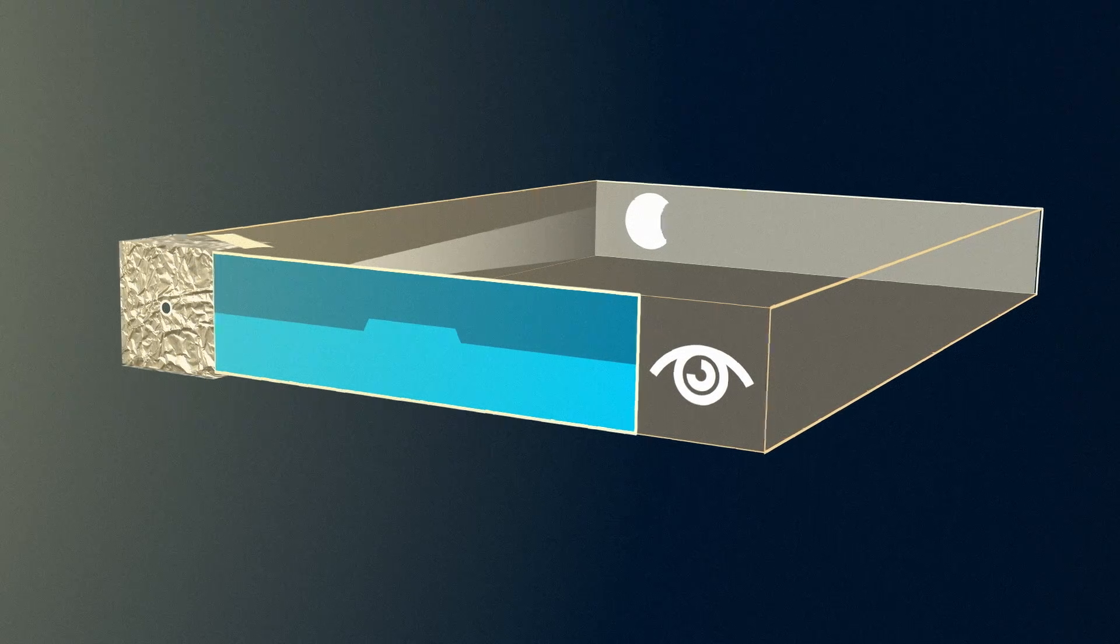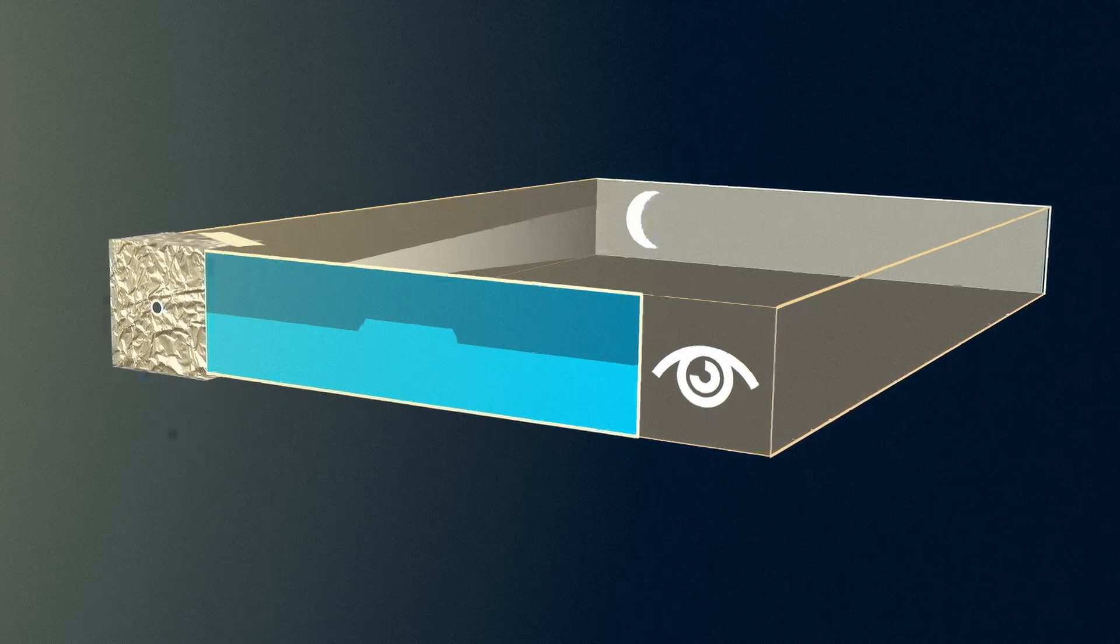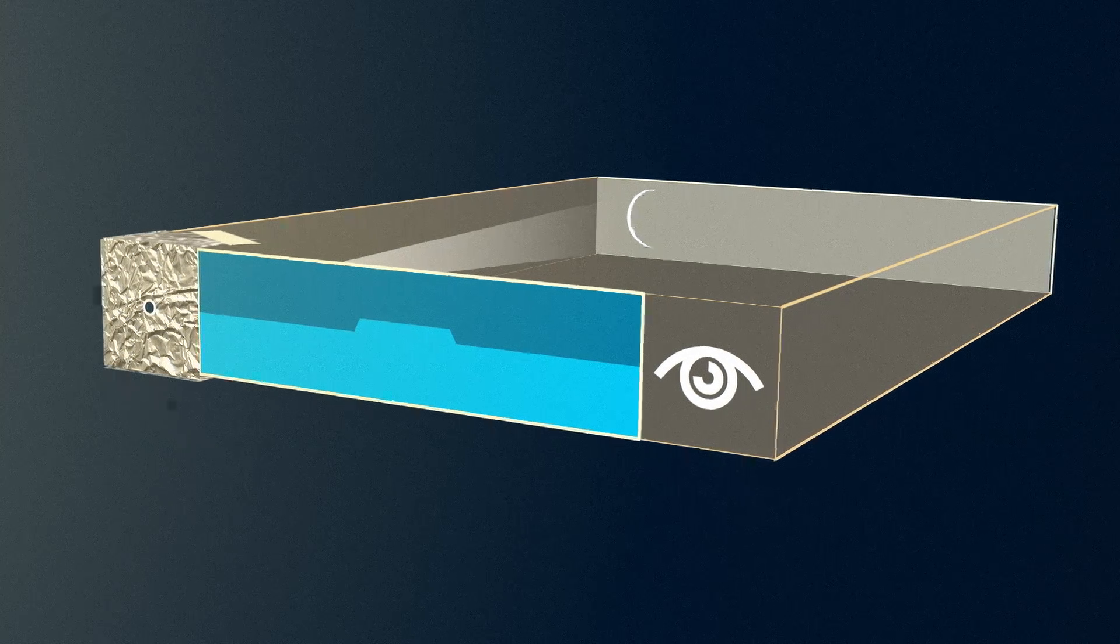You will watch a projection of the eclipsed sun on the paper inside of the box. Happy viewing, and remember, never look directly at the sun with the naked eye.